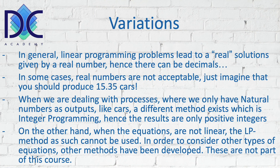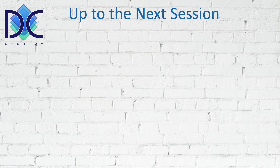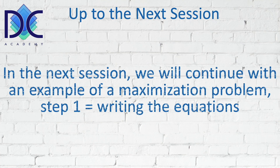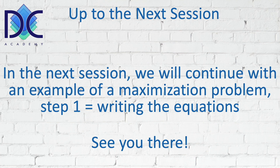These methods are not part of this course — they may be covered in future courses or YouTube videos. This was what I wanted to tell you about linear programming: how to start it, what the conditions are, and what the different steps to follow are. Based on what we've learned, we will continue with an example of a maximization problem, resolved in three steps: writing the equations, identifying the feasibility zone, and finding the optimal solution. The next video will be dedicated to step one — describing the problem and identifying the equations. You're doing a great job — I look forward to seeing you in the next video. Thank you and bye-bye.